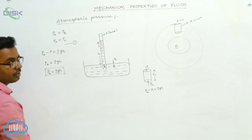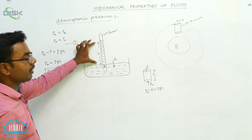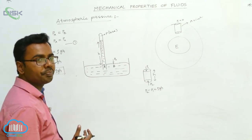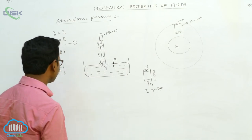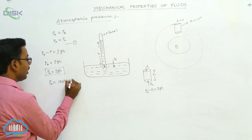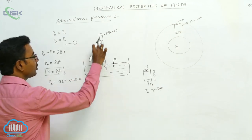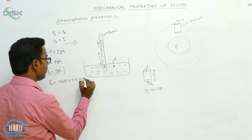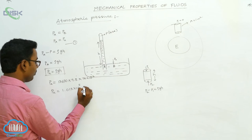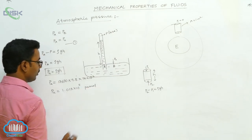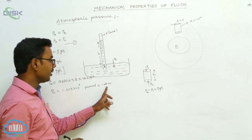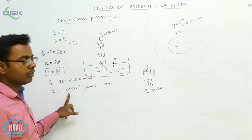Here, rho is the density of mercury, g is the acceleration due to gravity, and h is the height to which mercury is raised. At sea level, mercury rises to a height of 76 centimeters. The density of mercury is 13,600 kg per meter cube, g is 9.8 m/s², and height is 76 into 10 to the power minus 2 meters. After calculation, you get 1.013 into 10 to the power 5 pascals. This is also equal to 1 atmosphere.